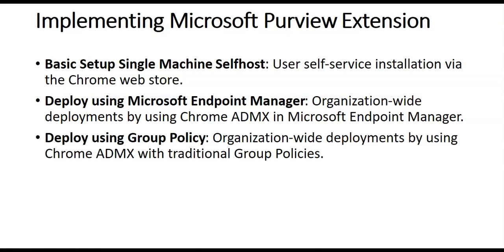The fastest way to deploy the Microsoft Purview extension is the basic setup single machine self-host. You open the Chrome browser, navigate to the store to download the Microsoft Purview extension, select the Add to Chrome button, and the extension installation is done.